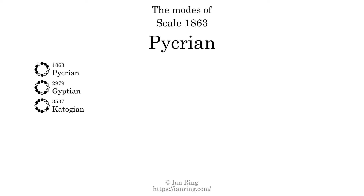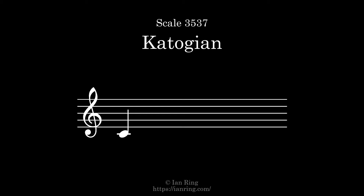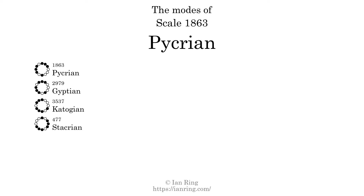The third mode is scale 3537, also known as Ketogen. It sounds like this. The fourth mode is scale 477, also known as Stachrian. It sounds like this.